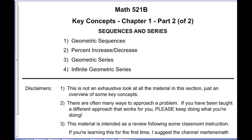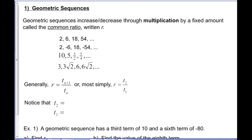A geometric sequence is one that increases or decreases through multiplication by a fixed amount called the common ratio. For arithmetic sequences it was addition by a fixed amount — the common difference. Here we have a common ratio written r. In the sequence 2, 6, 18, 54 we're multiplying by 3, so the common ratio is 3. In 2, -6, 18, -54 we're multiplying by -3. In 10, 5, 5/2, 5/4 we could say division by 2 but in terms of common ratio it's multiplication by one-half.